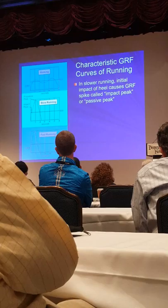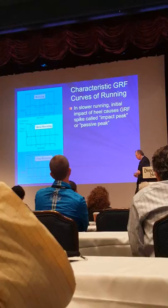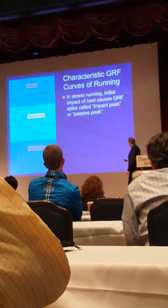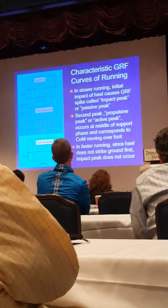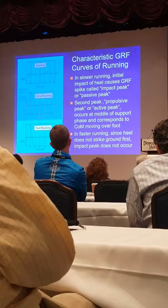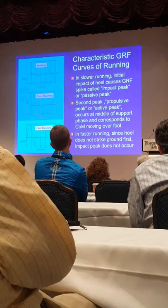The propulsive peak is when the center of mass comes over the foot and you're balanced — that's when the second peak occurs. In faster running such as sprinting, we don't have the impact peak curve because we're not hitting on the heel. In faster running, stance duration goes from 250 milliseconds down to under 200 milliseconds. In sprinting, we can go down to almost 150 milliseconds.